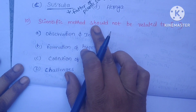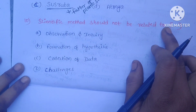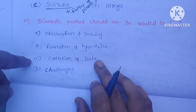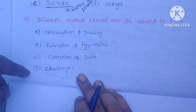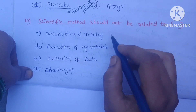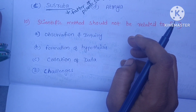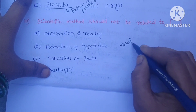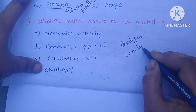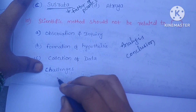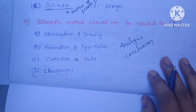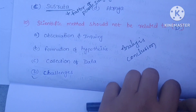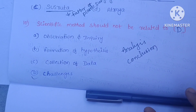The next question is: the scientific method should NOT be related to — A. Observation and inquiry, B. Formation of hypothesis, C. Collection of data, D. Challenges. The scientific method involves observation, formation of hypothesis, collection of data, analysis, and conclusion. Challenges are not part of the scientific method, so the correct answer is D. Challenges. Thank you for watching — please subscribe for more informative videos.